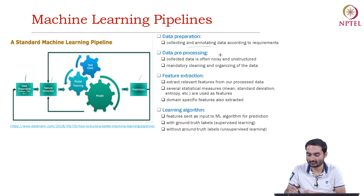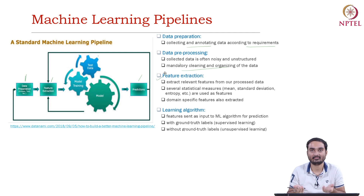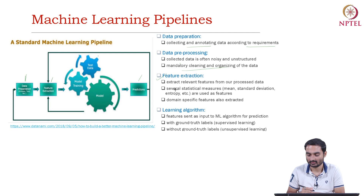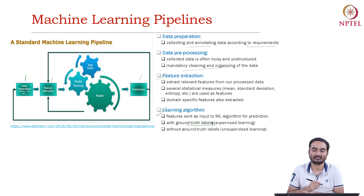Data preparation involves collecting and annotating data according to the requirement. Data preprocessing is needed because collected data is often noisy and unstructured — mandatory cleaning is required. For feature extraction, features are manually extracted — hand crafted features based on your intuition, your hypothesis, and domain specific knowledge, which helps identify appropriate features. Then you use learning algorithms, ML algorithms, either supervised or unsupervised, or semi-supervised, for predicting labels.